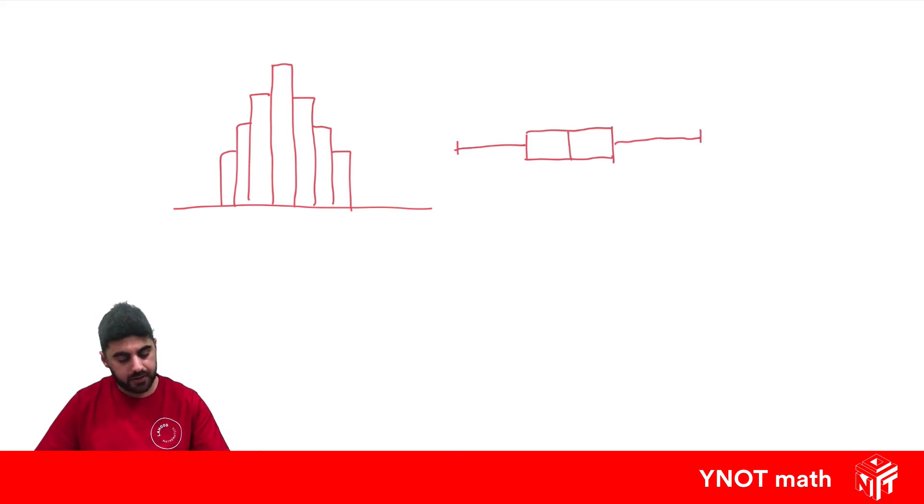And we can say this data is symmetric, has a symmetric distribution. And what gives that away is obviously our histogram is nice and symmetric and our Q2 is right in the middle of the box plot.